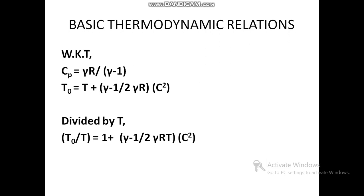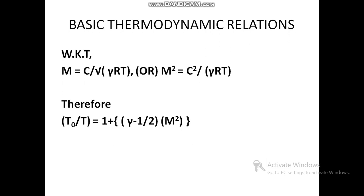We know that Mach number M equals C divided by the square root of gamma R T — that is, velocity of the object divided by the velocity of sound. For simplification, M squared equals C squared divided by gamma R T. Substituting this into the previous equation, we get T0/T equals 1 plus (gamma minus 1) divided by 2 times M squared.